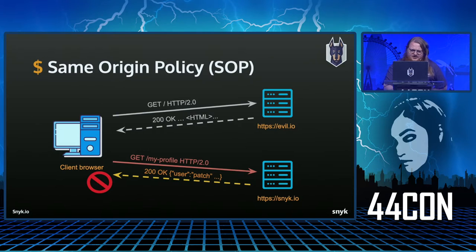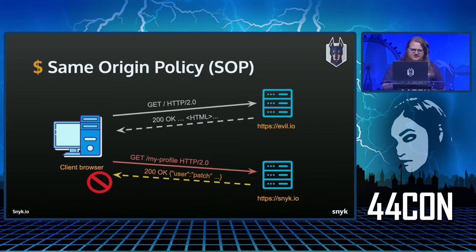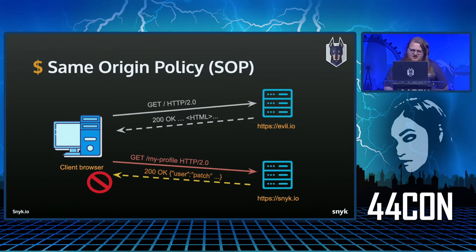In practice, if someone visits evil.io, that page may contain JavaScript that reaches out to snyk.io. If that JavaScript tries to make a GET request to a user profile on snyk.io, the cookies will be sent in most cases when using cookie-based authentication and the response will be sent back to the browser. However, the key distinction is that the response is not released — the JavaScript gets a CORS error and cannot read that response.